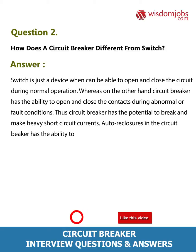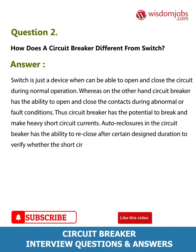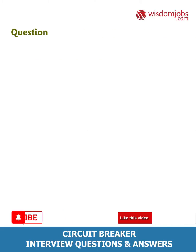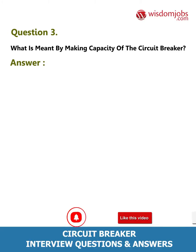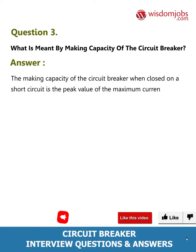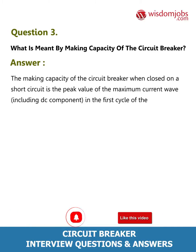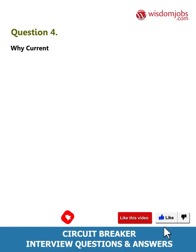The circuit breaker also has auto-reclosure ability — it can reclose after a certain design duration to verify whether the short circuit was cleared. Question 3: What is meant by the making capacity of a circuit breaker? Answer: The making capacity of the circuit breaker, when closed on a short circuit, is the peak value of the maximum current wave including the DC component in the first cycle of current after the circuit is closed.